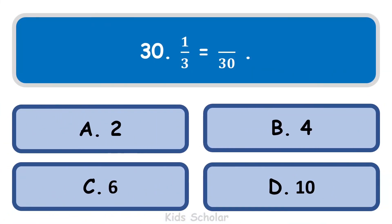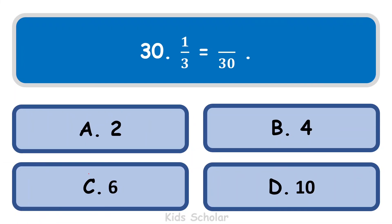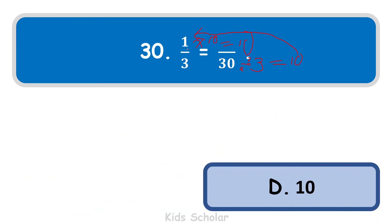Next question is: 1 by 3 equals dash by 30. You need to find what number goes in the numerator. First, divide 30 by 3 to get 10. Then multiply 1 by 10 to get 10. So the correct answer is 10. Thank you.